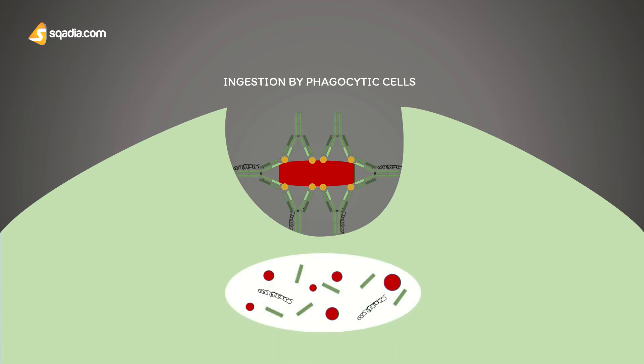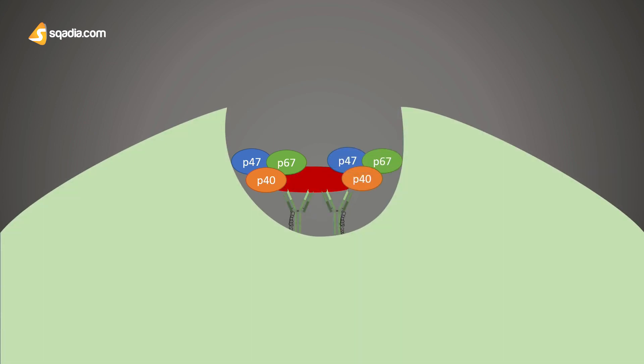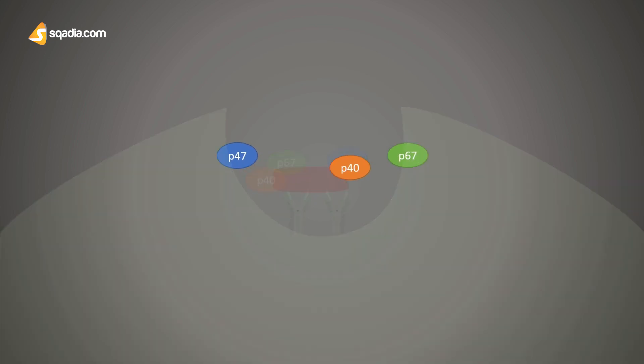Specific serum proteins known as opsonins coat particles and cause the particles to bind avidly to phagocytes and trigger ingestion. For each type of opsonin, there is an opsonin-specific membrane receptor on phagocytes responsible for binding particles coated with that opsonin.